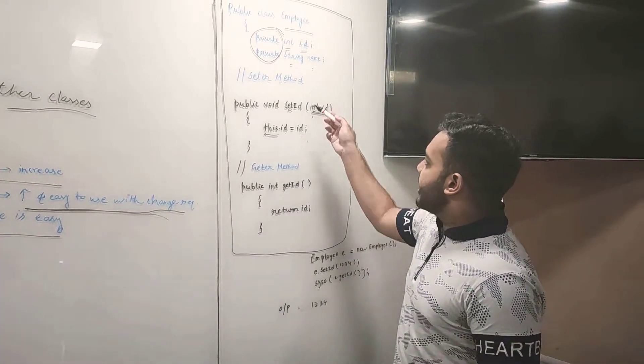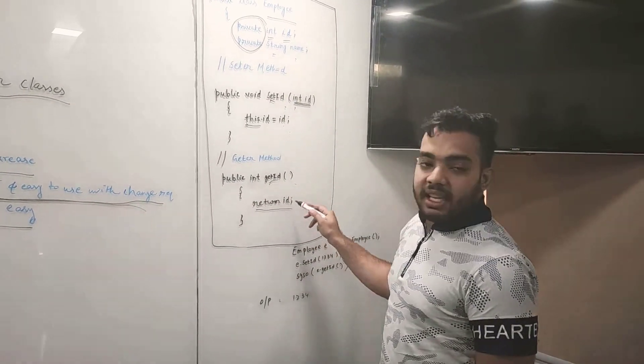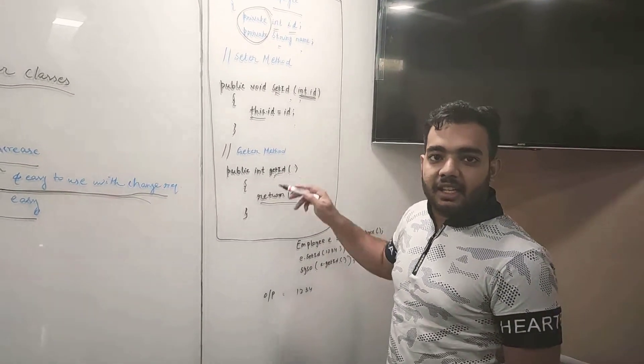After setting the id, we have used the get method where we have to access the values stored in the set id.